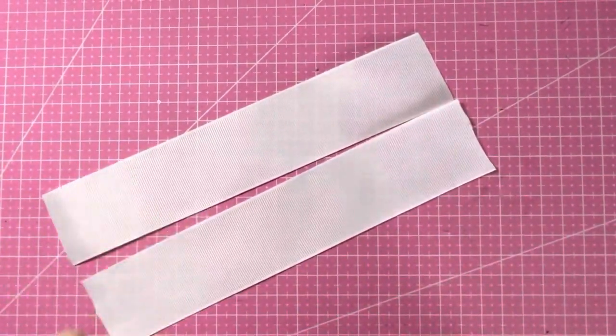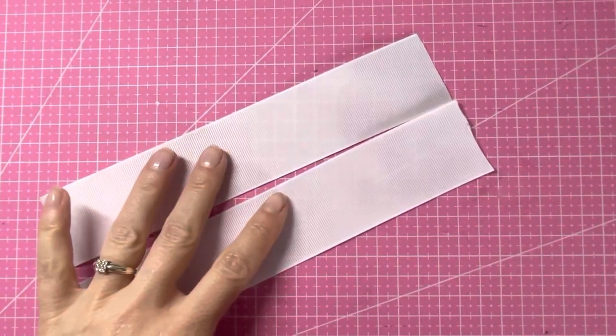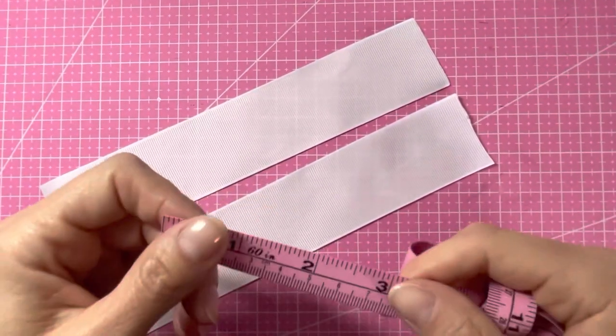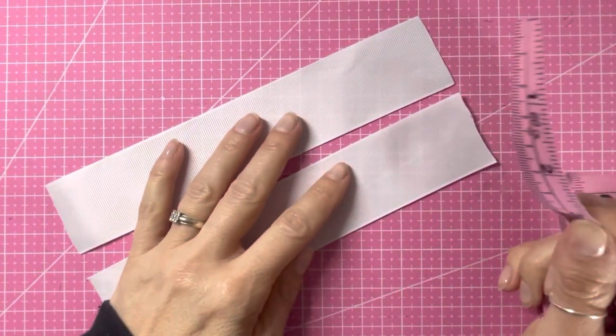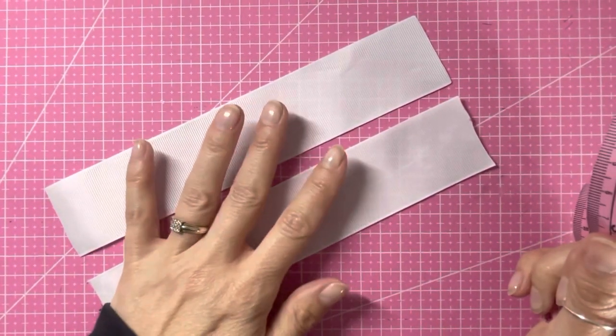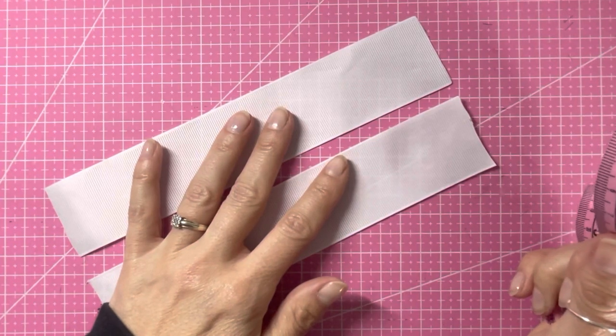This is similar to the double tux bow or the double pinch bow they're sometimes called, but I call this one the double looped X bow because we form an X to make it.